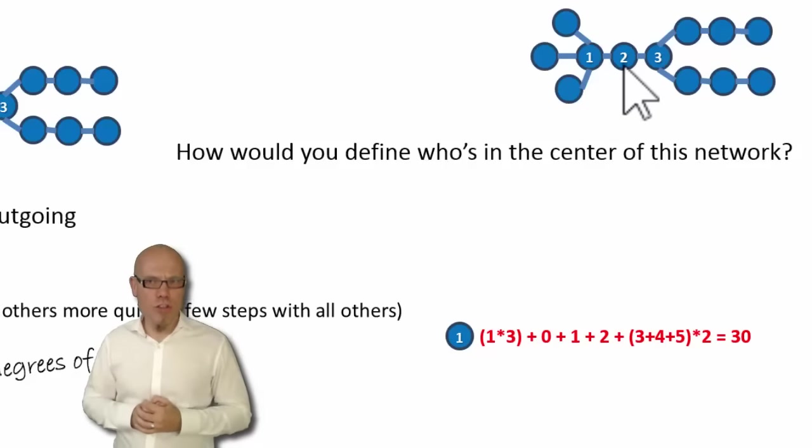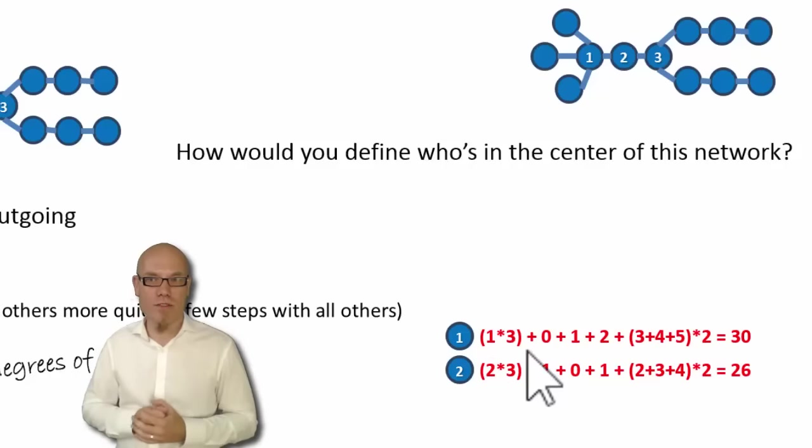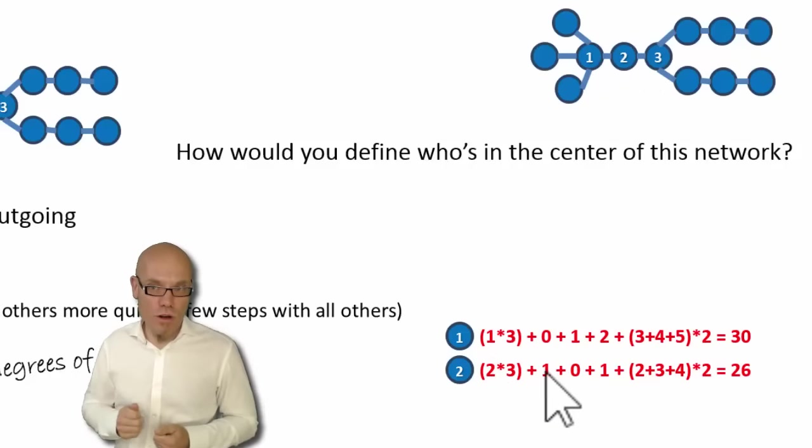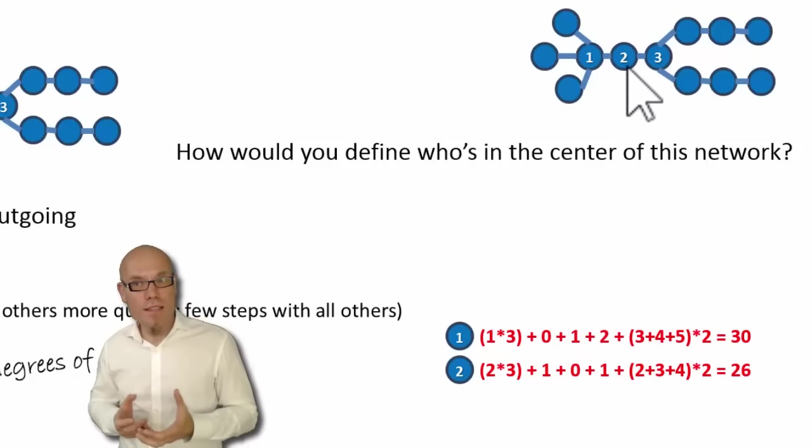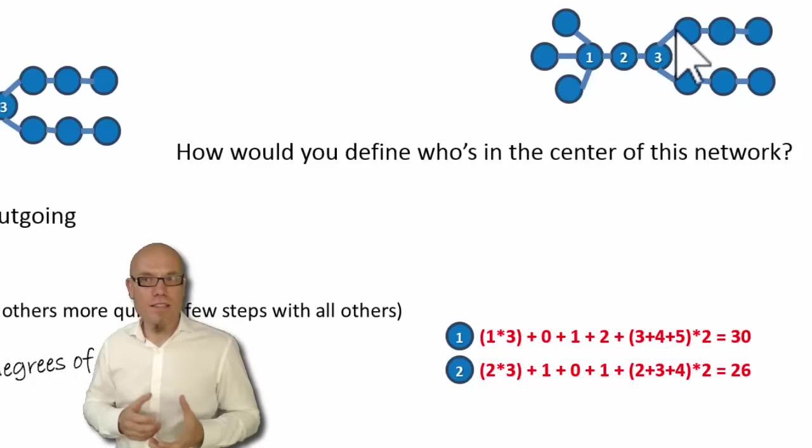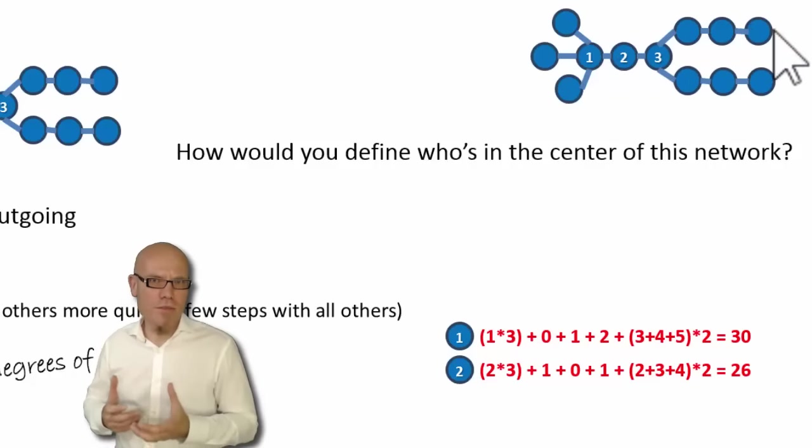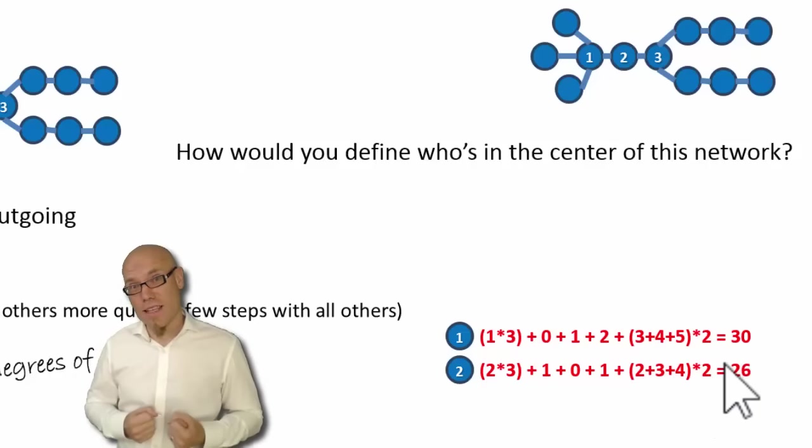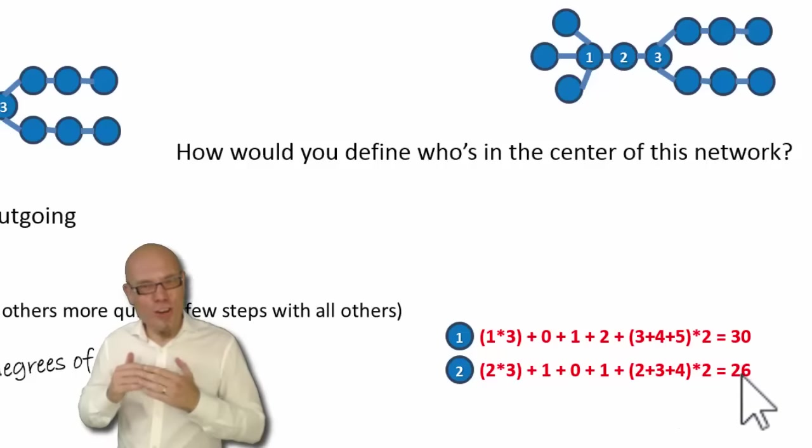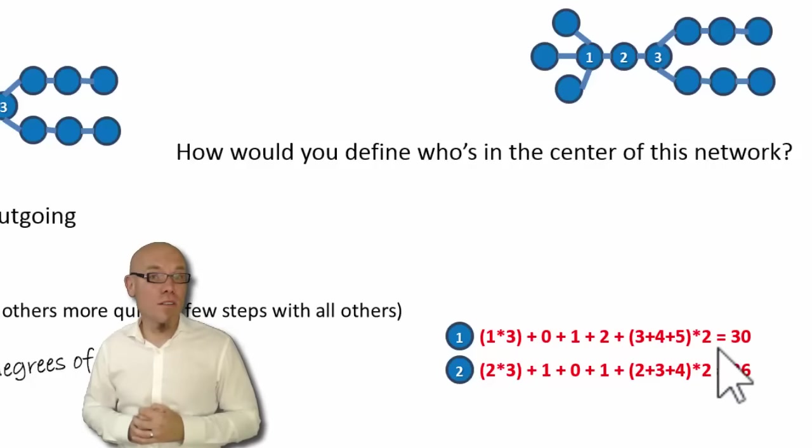Let's do it now for node number two. Node number two has two steps to go to these three here. So it happens three times, two steps times three. Then one step to go from two to one, zero steps to go from two to two, one step to go from two to three. And then to go from two to these here, that's two steps, three steps, four steps, and that happens two times up here and down here. So you sum them all up. That's twenty-six steps. So actually, node number two is closer to everybody than node number one.